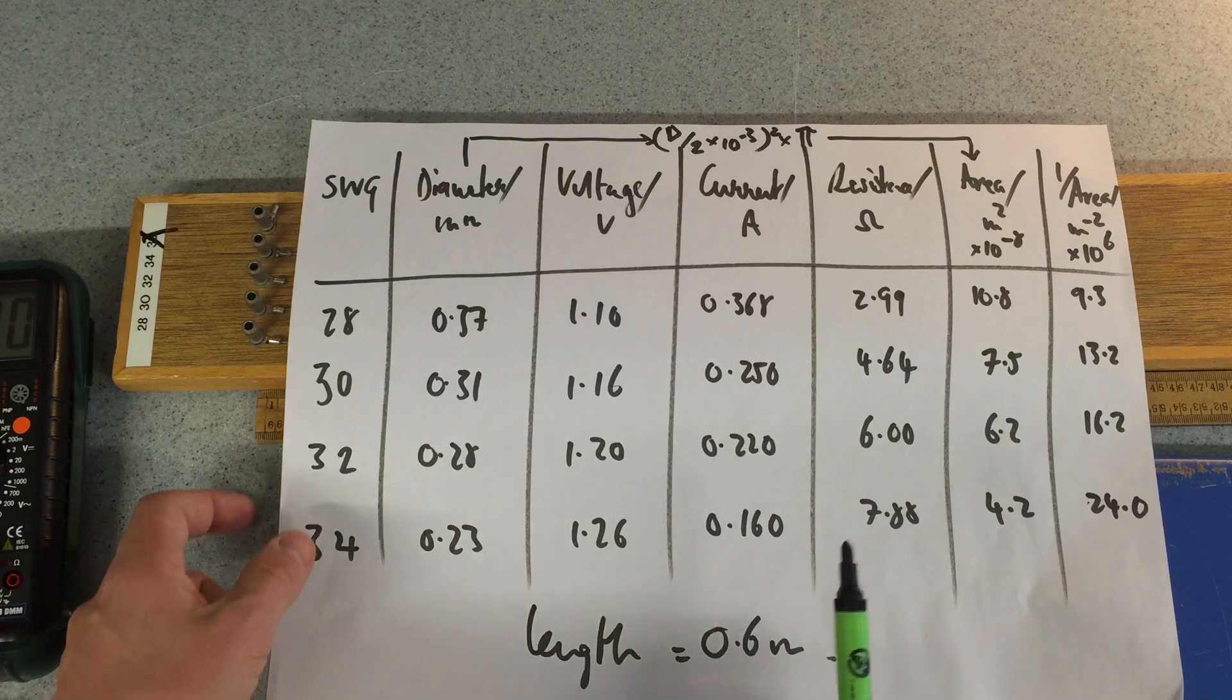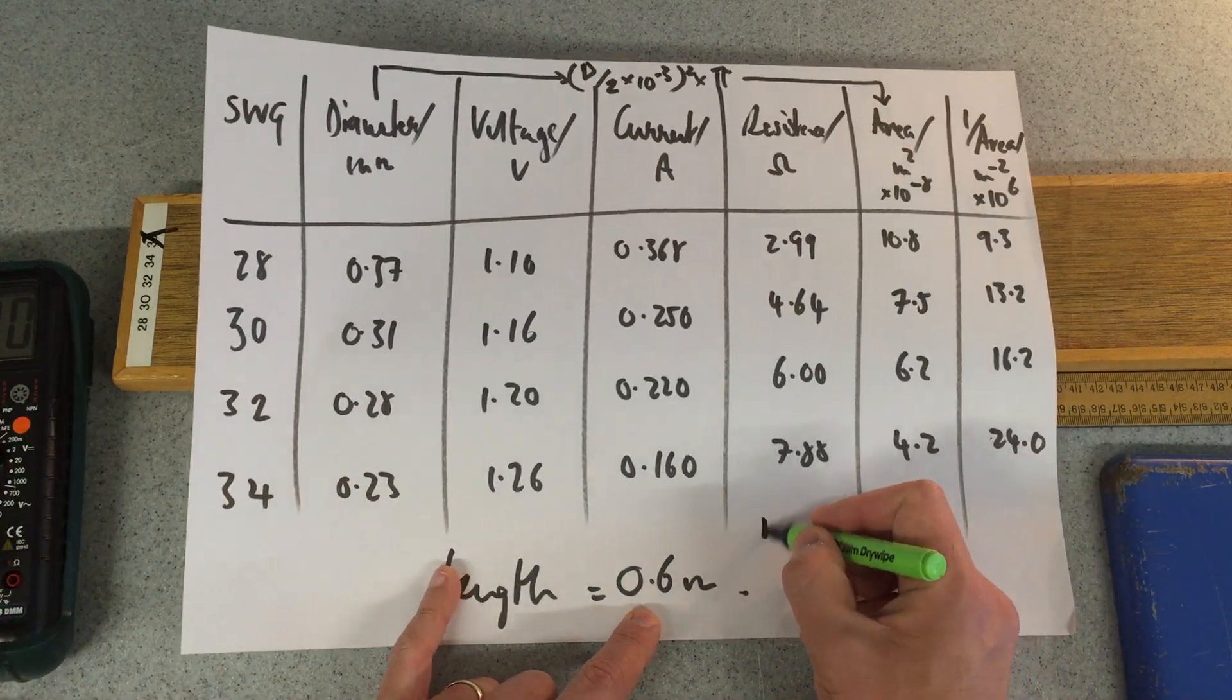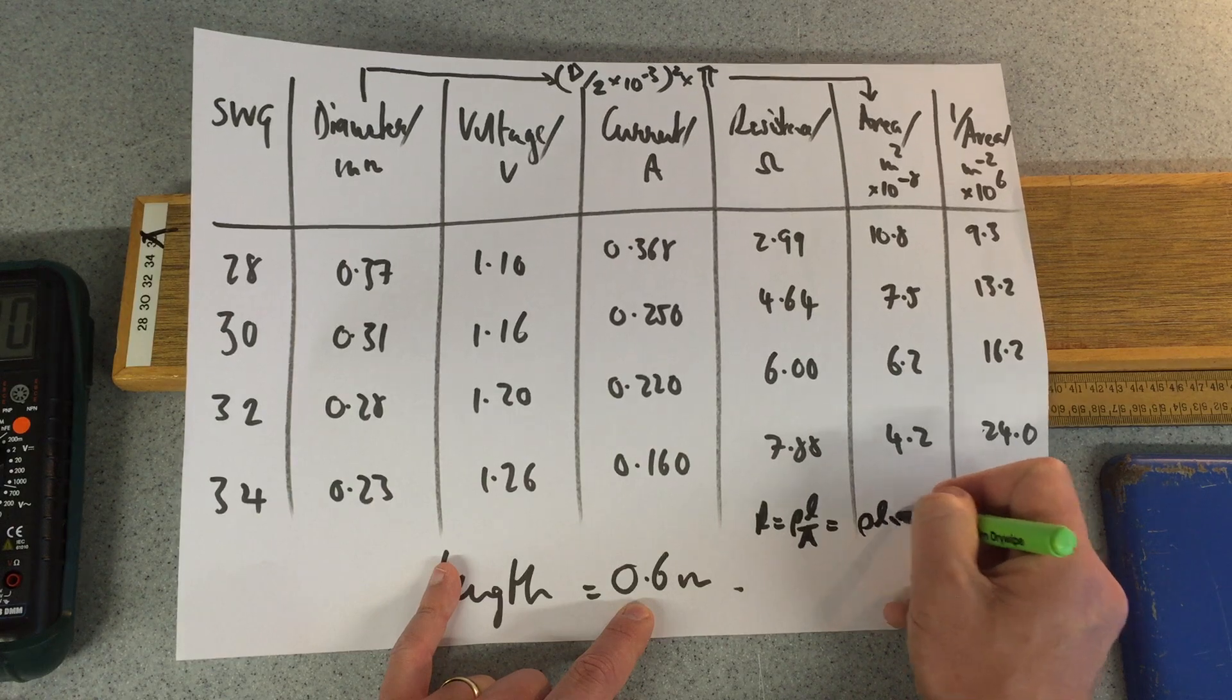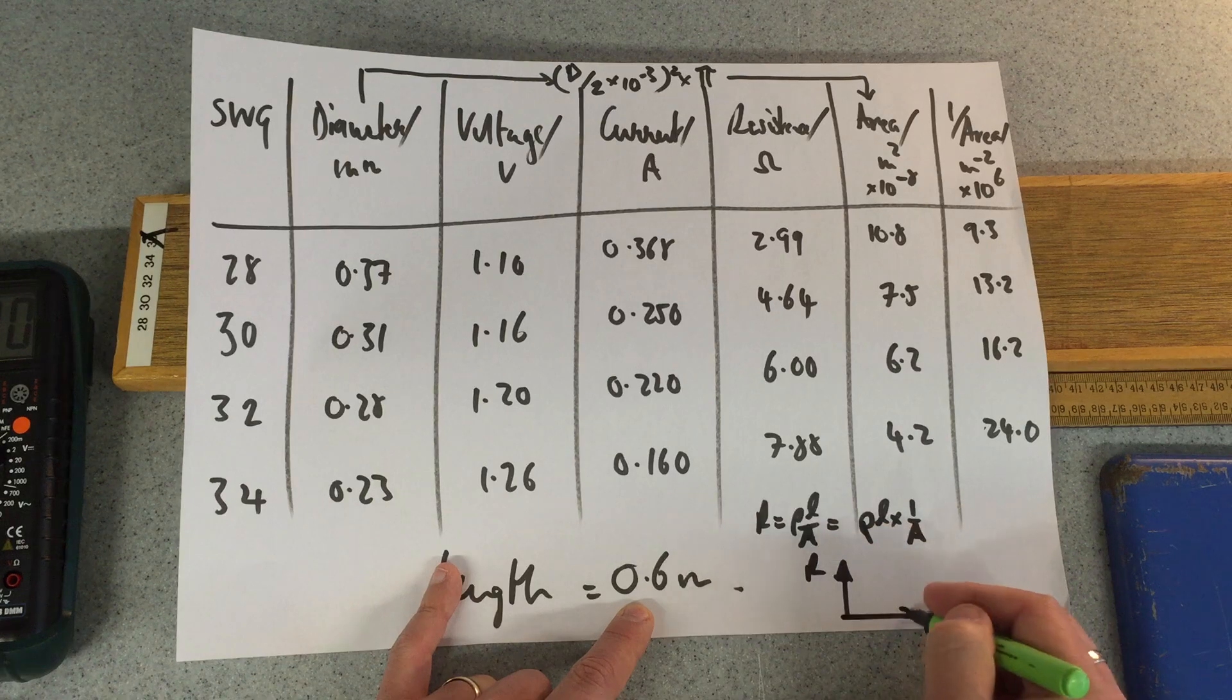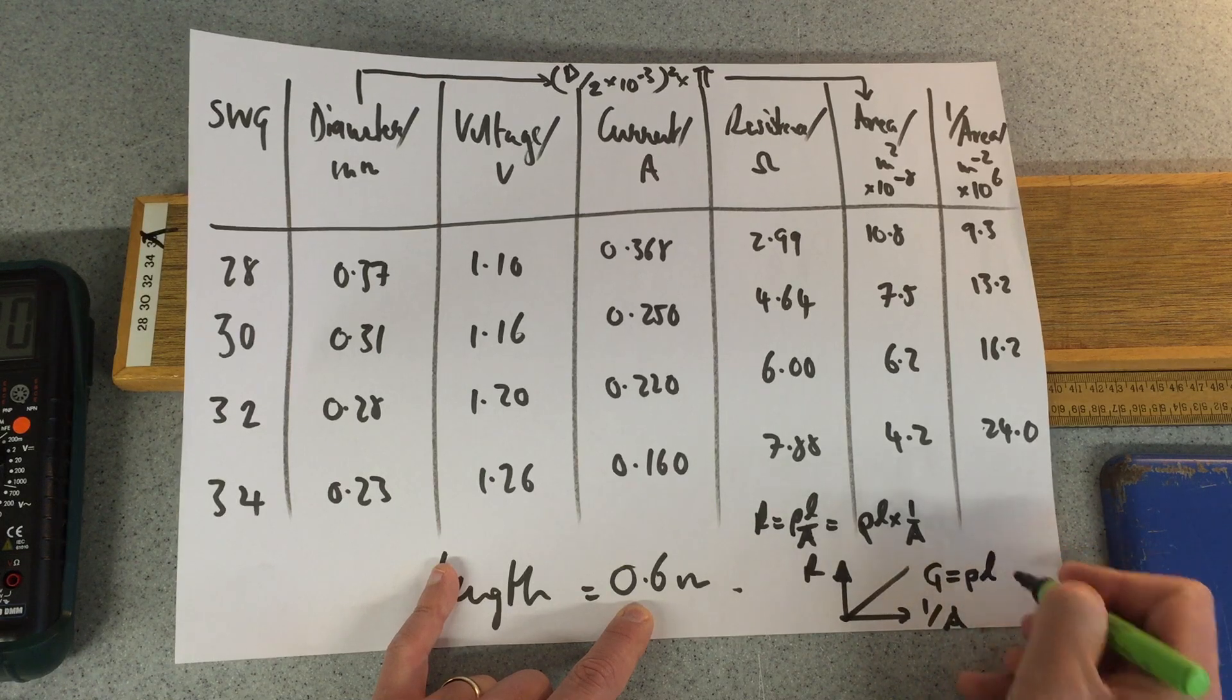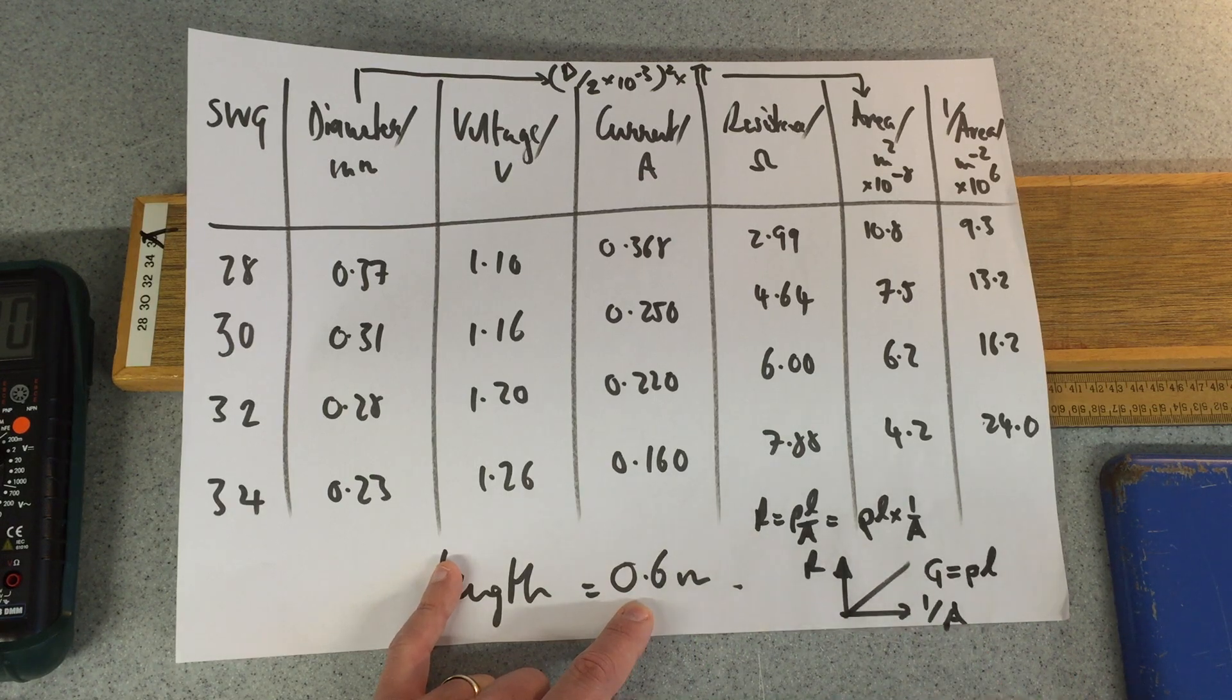So what are we going to do to see whether it is an inverse proportionality and how to work out the resistivity in turn? Well, we know that R is rho L over A, which is the same as saying rho L times 1 over A. So if I were to plot resistance against 1 over the area, I should get a straight line in which my gradient will equal rho L. So therefore merely take my gradient, divide it by the length, 0.6, and that should give me the resistivity of the material.